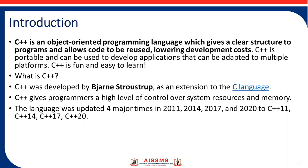First of all, what is C++? C++ is an object-oriented programming language which uses a clear structure to the program and allows code to be reused, lowering development costs. C++ is affordable and can be used to develop applications that can be adapted to multiple platforms. C++ is fun and easy to learn, and this language is mostly used for gaming purposes.